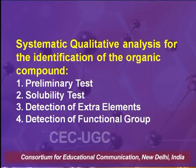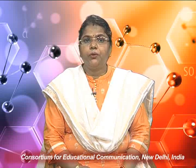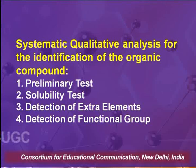The first step for the systematic qualitative analysis is the preliminary test. This test will give you an idea of the possibility of the compound, but we call it a preliminary test because these kinds of tests will not confirm the presence of the organic compound. The second step is the solubility test — after doing the preliminary test, you need to perform the solubility test.